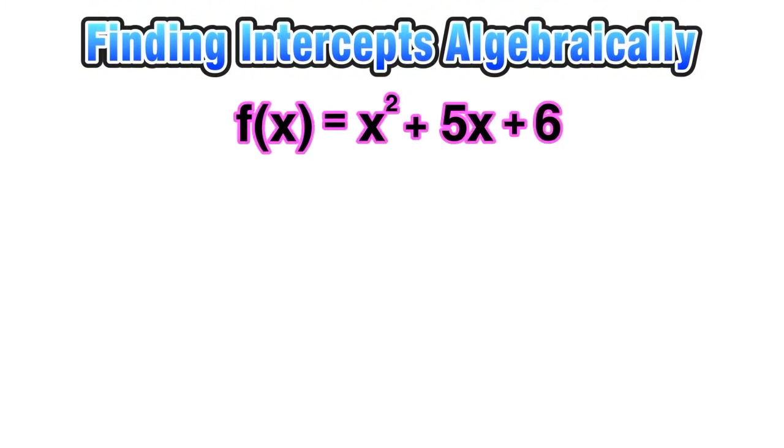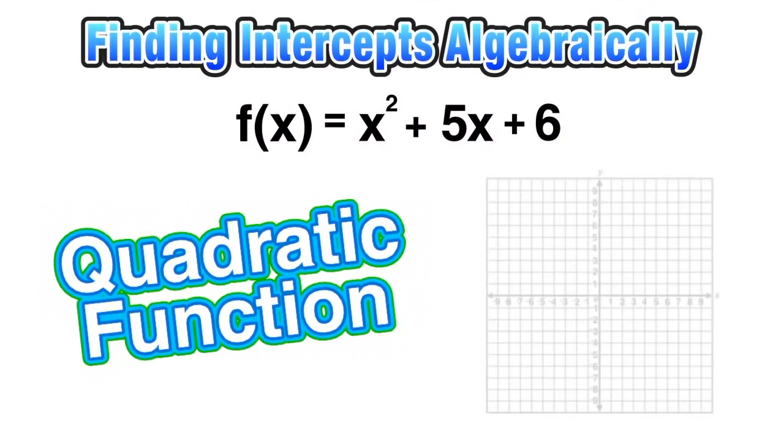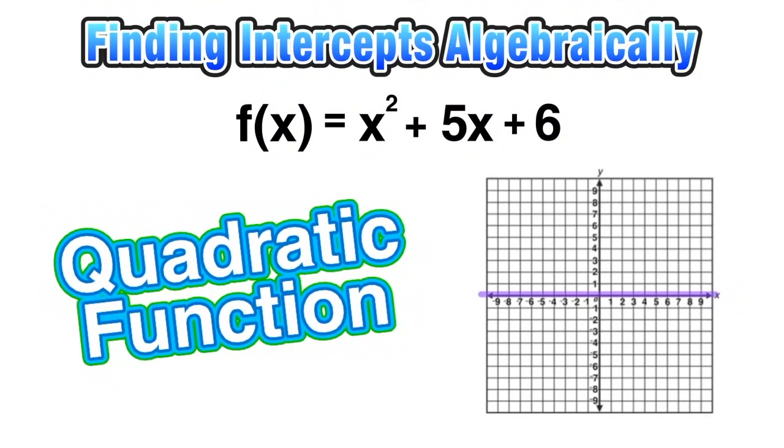Now let's find the x and y-intercepts for a quadratic function. If we think about what a quadratic function looks like in terms of a parabola, we need to understand why a quadratic can possibly have two x-intercepts while a linear function can only have one.